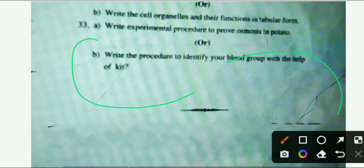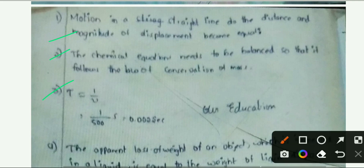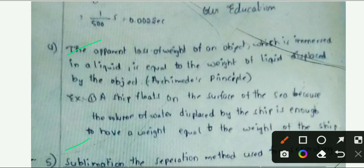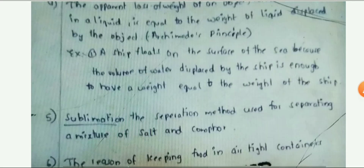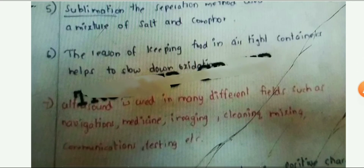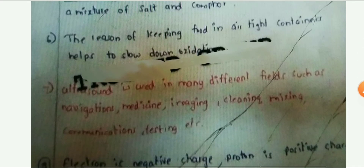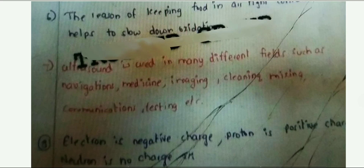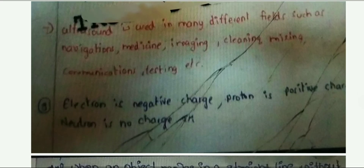You can see question 33B. Next you can see your answer section — this is your first answer, second answer, third answer, fourth answer, and fifth answer. Complete this question paper. In the next video we will provide this question paper with clarity.